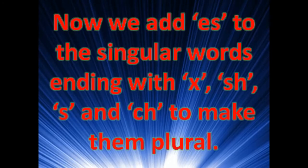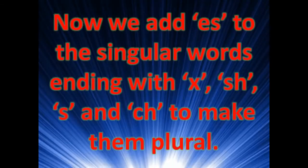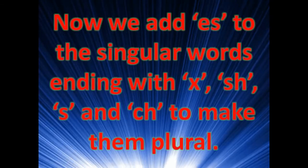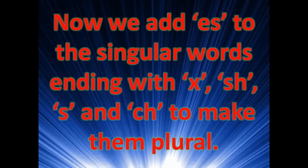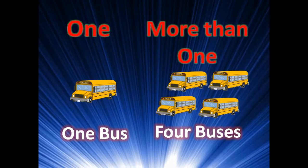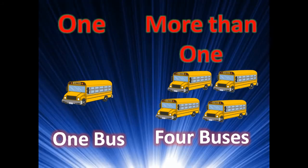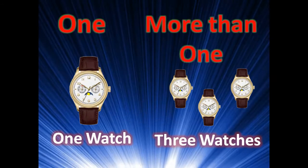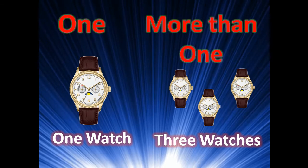We add ES to singular words ending with X, SH, S, and CH to make them plural. One bus, four buses — we add ES. One watch, three watches — we add ES. One fox, two foxes — we add ES.